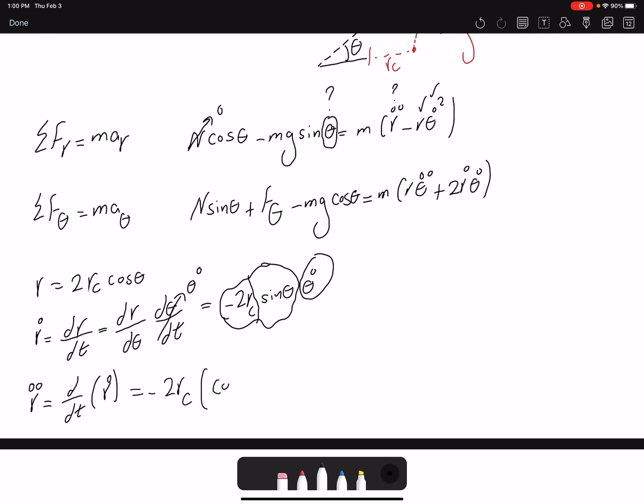The derivative of sine theta would be cosine theta. I have a theta dot because of the chain rule and multiplying it by theta dot, the other component. Plus the derivative of theta dot, which would be theta double dot, times negative 2Rc sine theta. But because theta double dot is 0, so I directly write it here. Cosine theta theta dot squared.